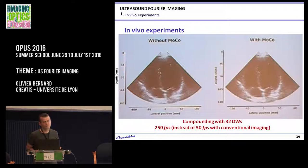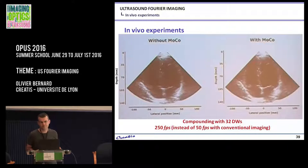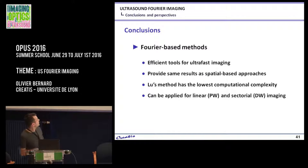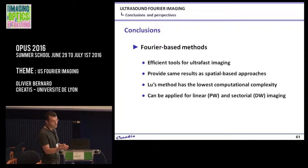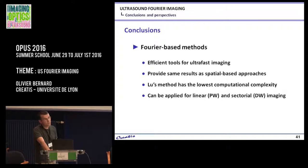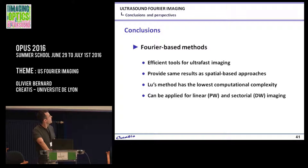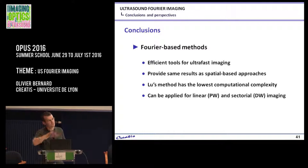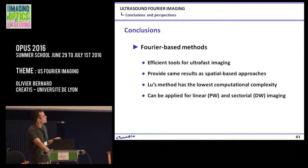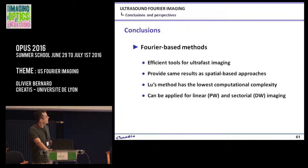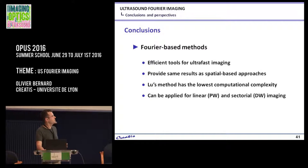In conclusion: Fourier-based methods can be seen as efficient tools to reconstruct ultra-fast imaging. From all tests done, they provide almost exactly the same quality as spatial-based approaches. The method sampling the Fourier spectrum along the KZ direction produces the lowest computational complexity. It can be applied both for plane wave and diverging wave emission.